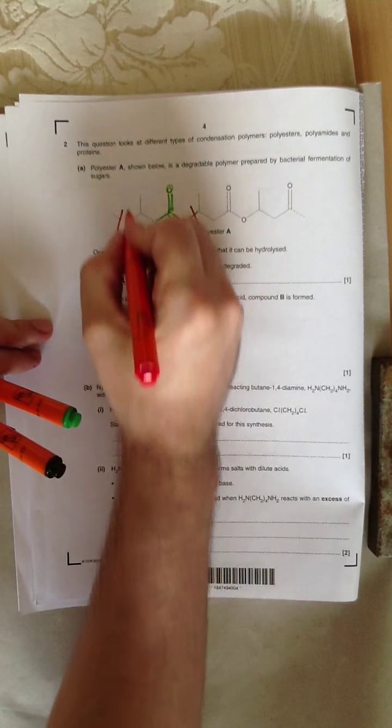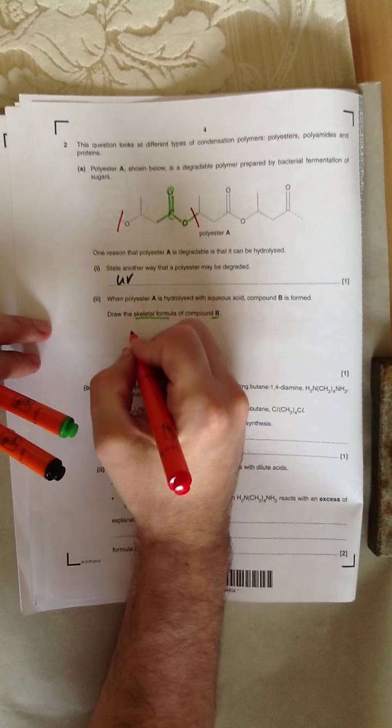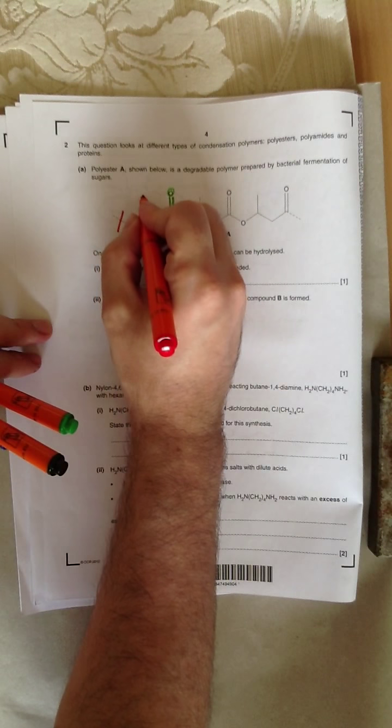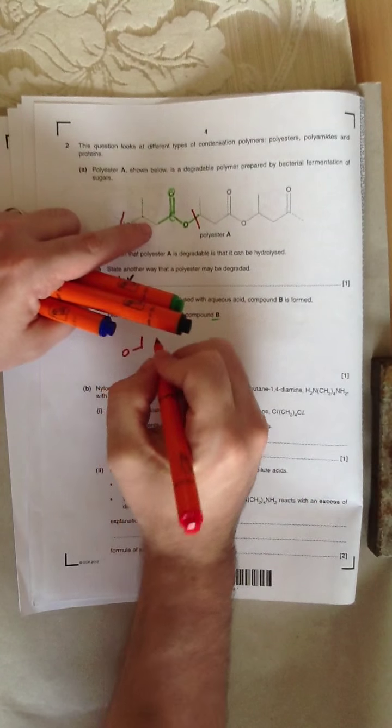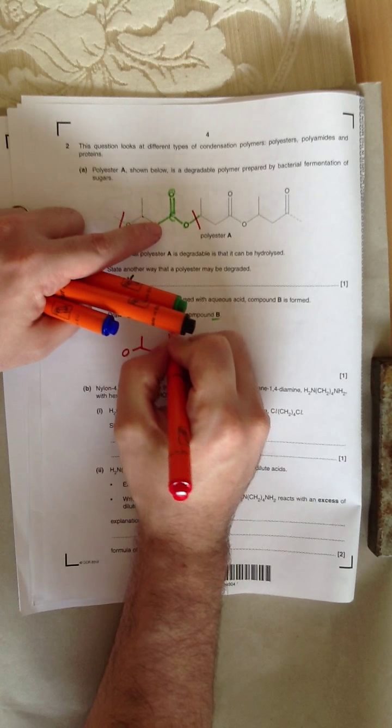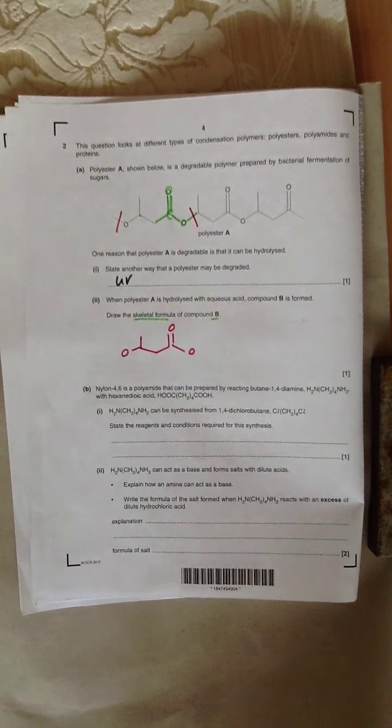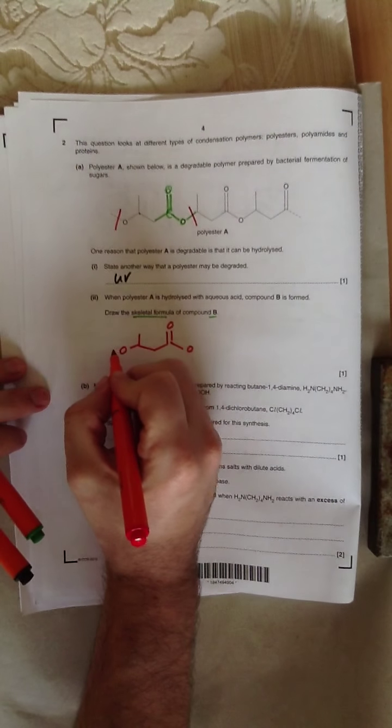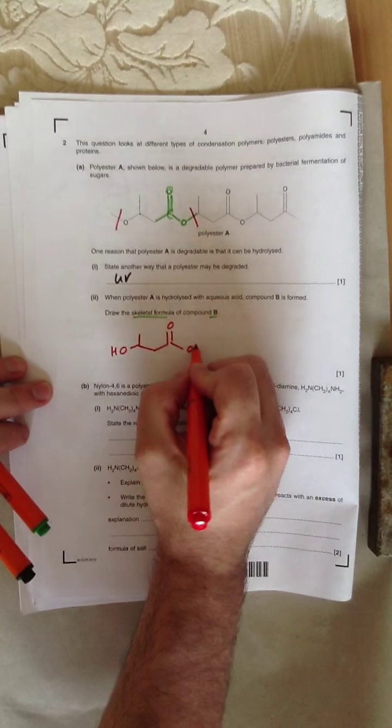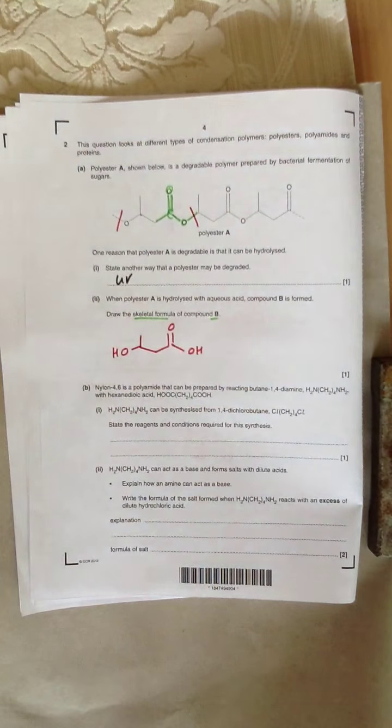So if I draw what we'd have, we'd have an oxygen there. That carbon is this carbon there. It goes down, goes up, goes O. Now we know that oxygen has two bonds, so it must be an alcohol and a carboxylic acid. Does that make sense?